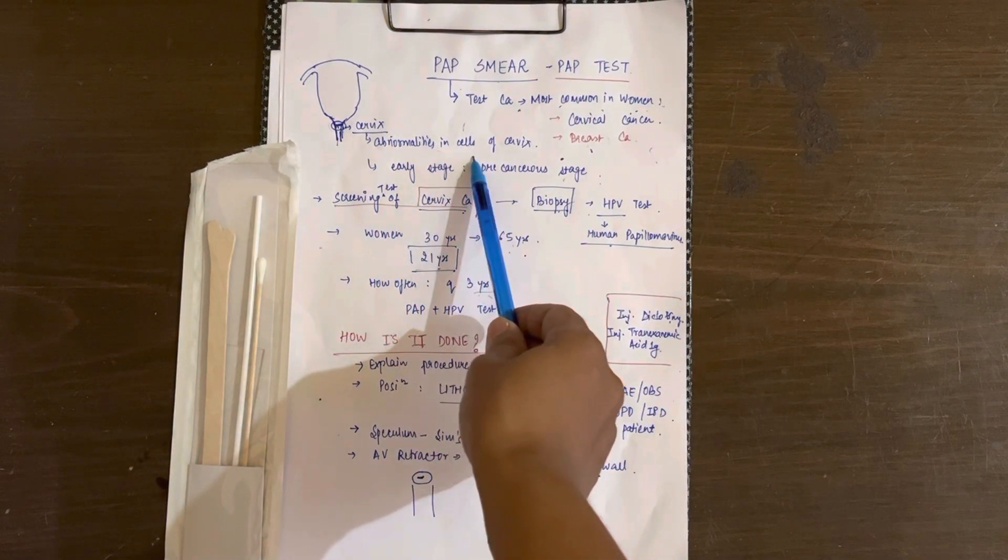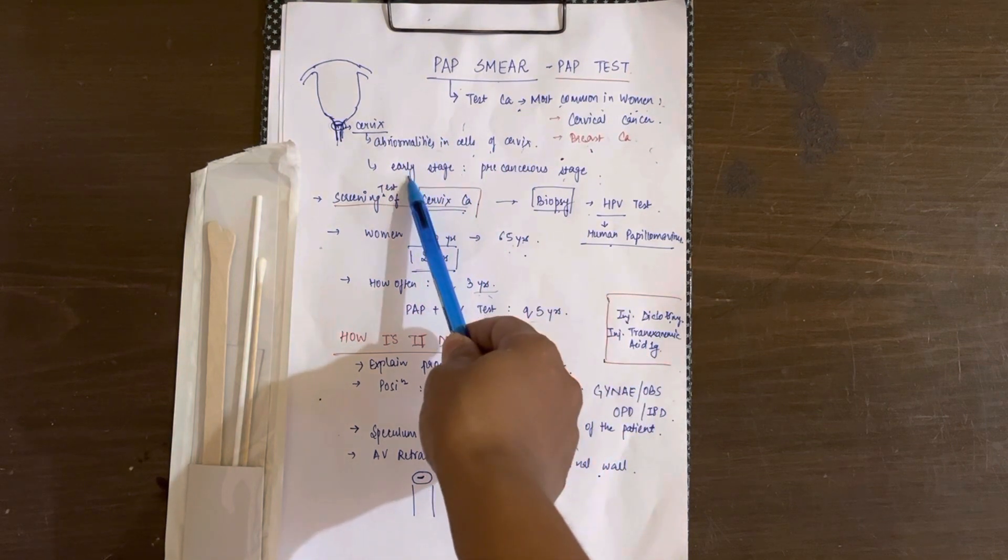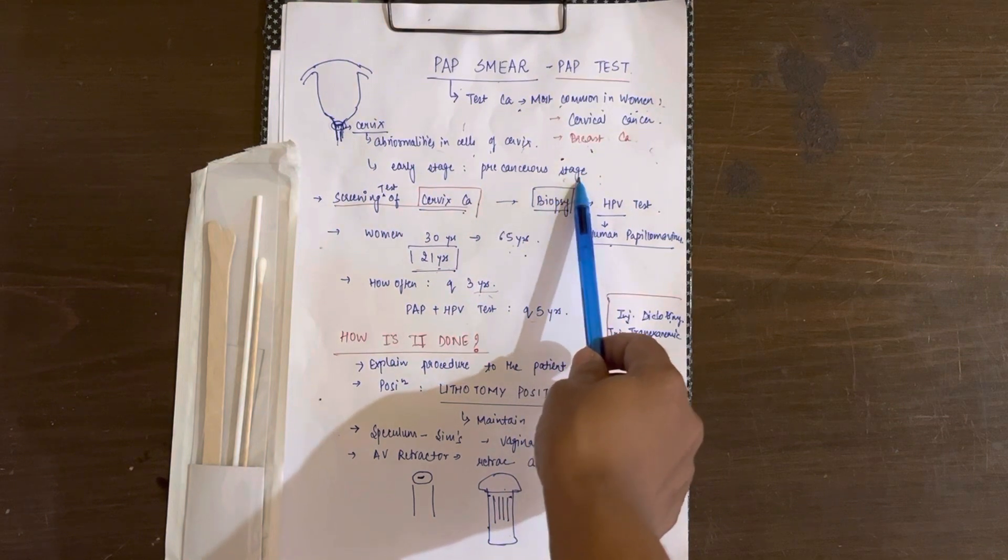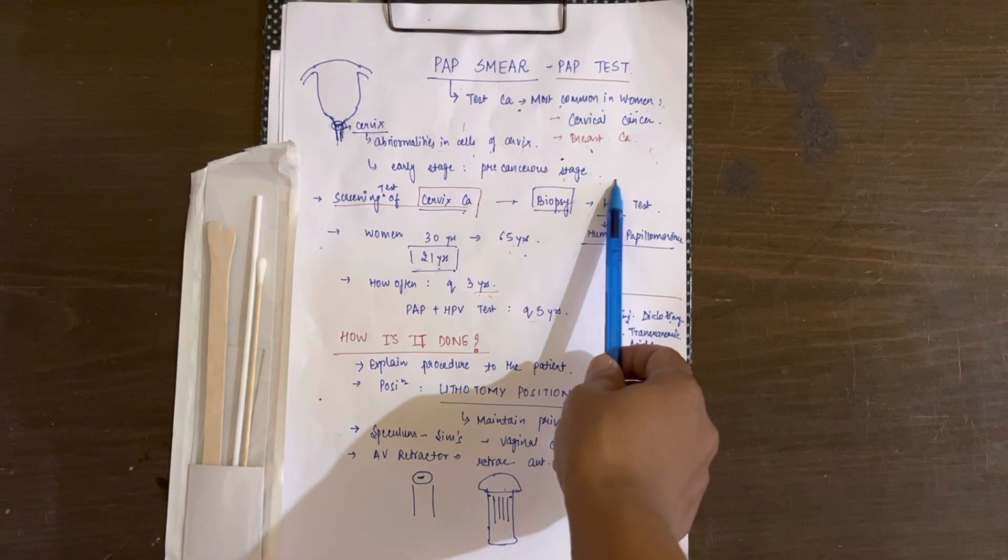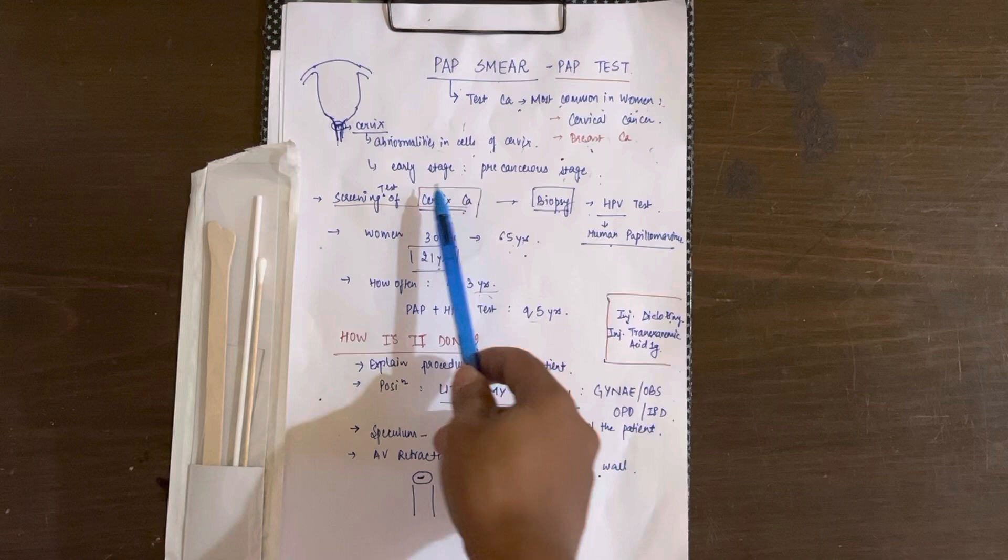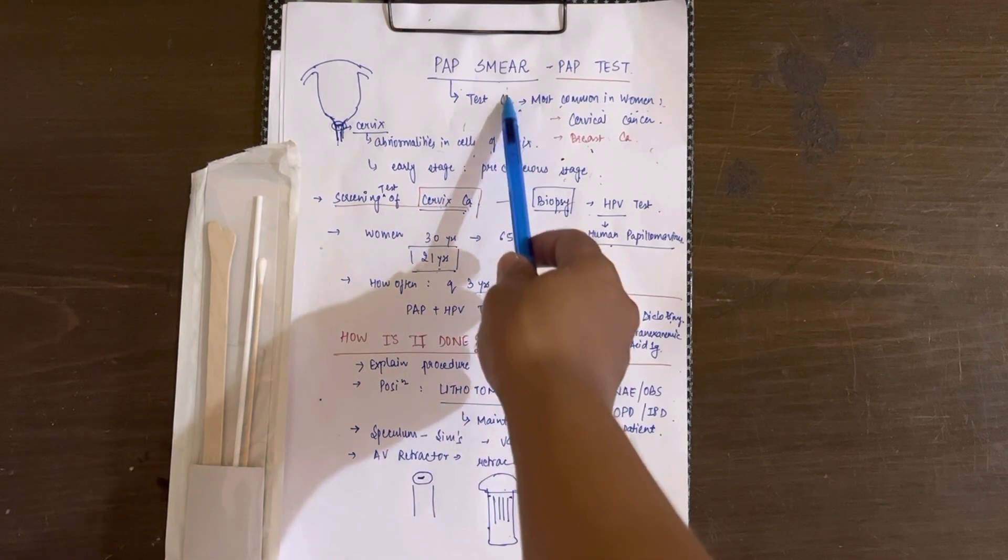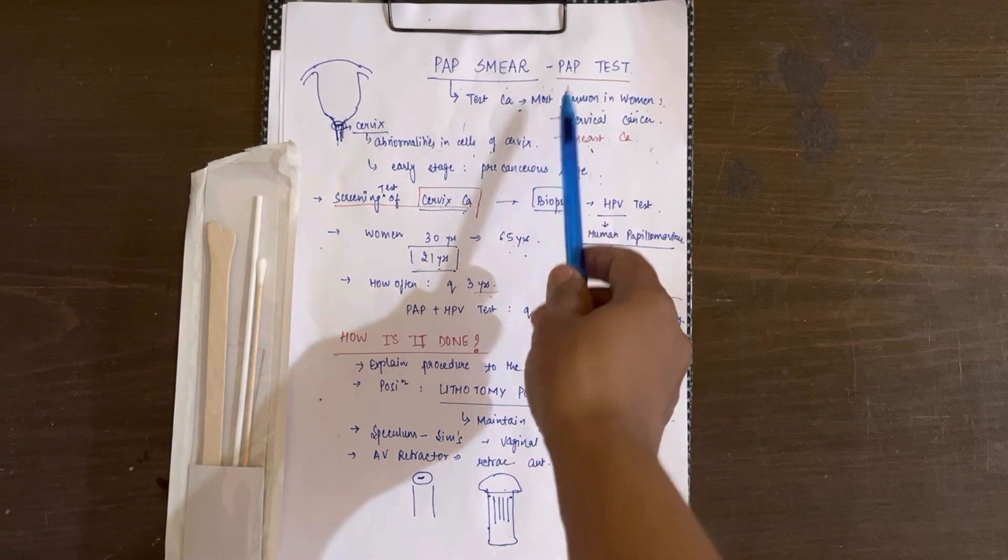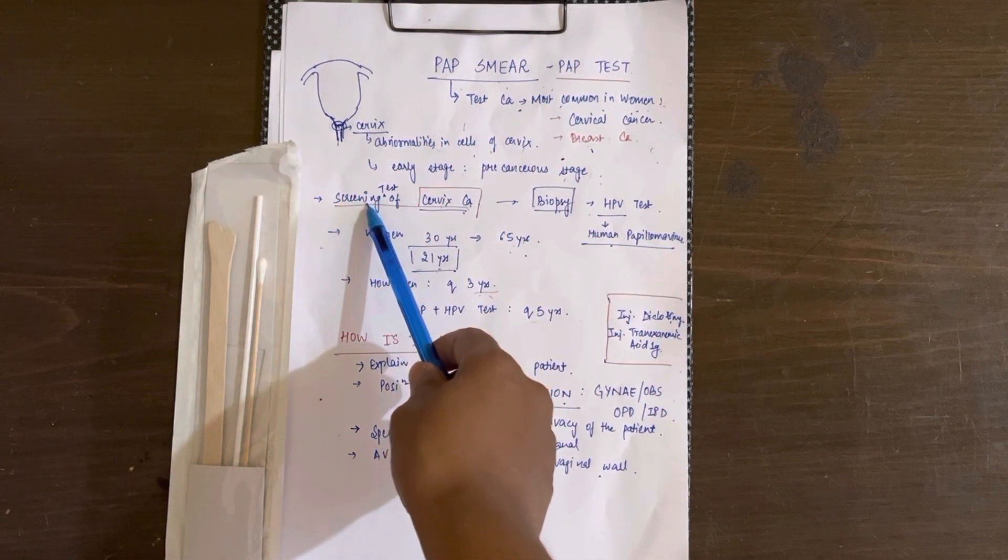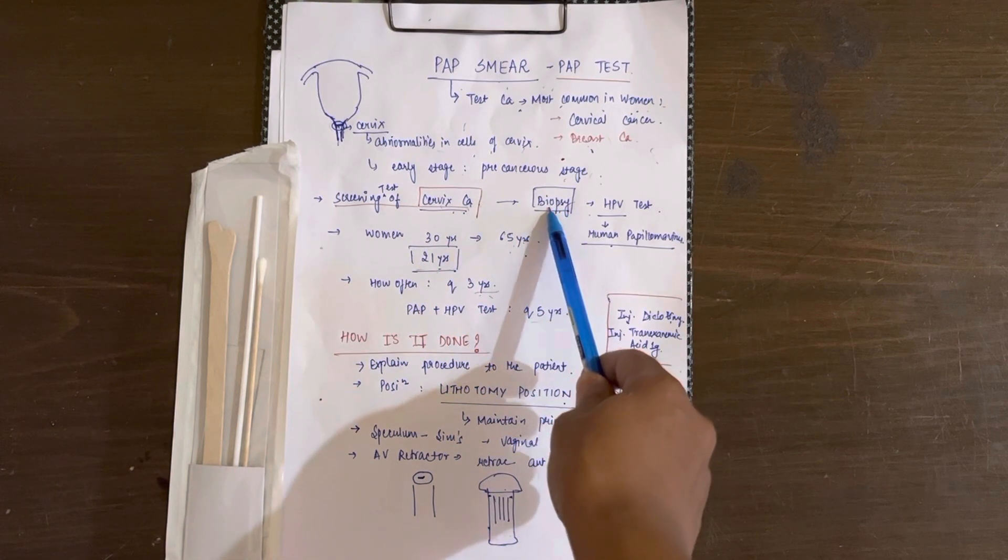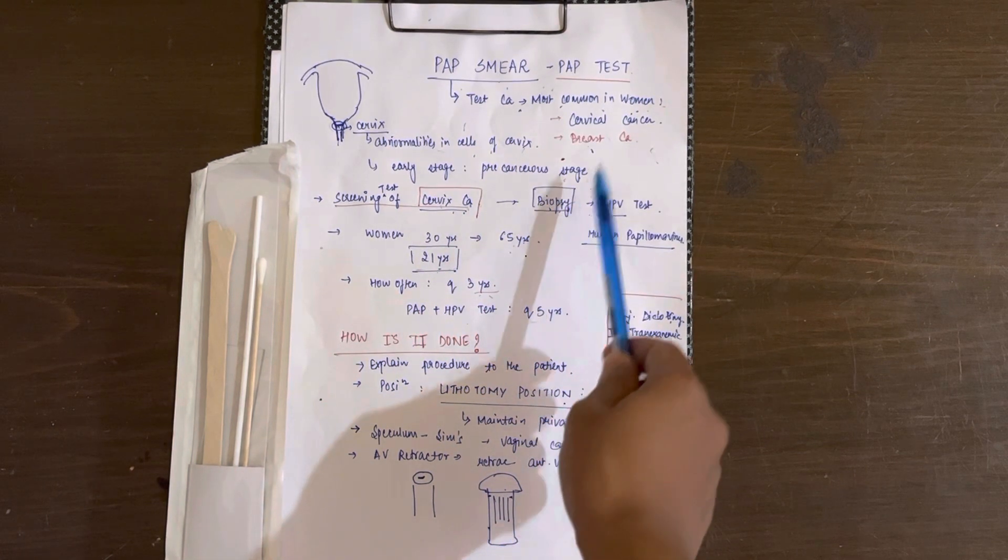This Pap smear detects abnormalities in the cells of the cervix and can also detect the early pre-cancerous stage of cancer. The Pap smear is the best screening test for cervical cancer, whereas biopsy is the confirmatory test.